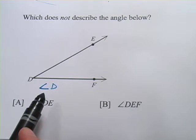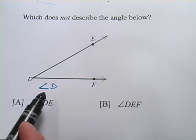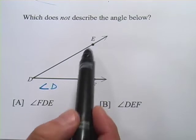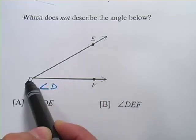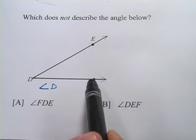Most of the time though, so as not to get confused with other possible angles, we use three letters. And we use the vertex here, the point of the angle, and then two others on either side of the angle.